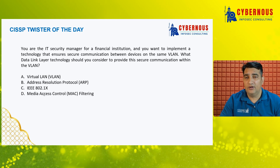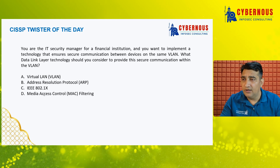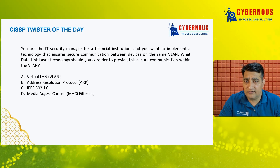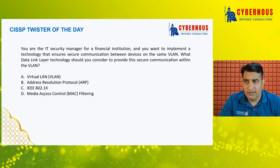Option B is Address Resolution Protocol (ARP). This also works at Layer 2 and maintains a mapping between the MAC address of a system and its IP address. However, this is not the technology to ensure secure communication within VLANs.